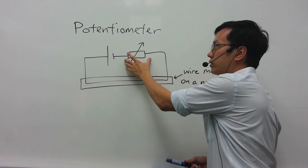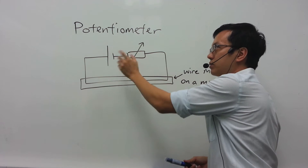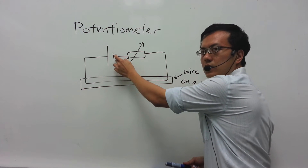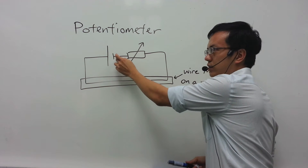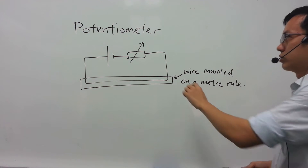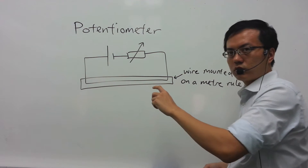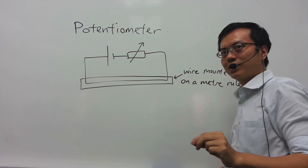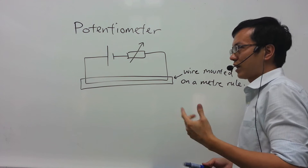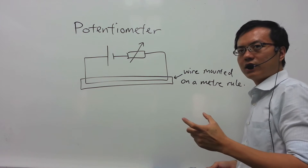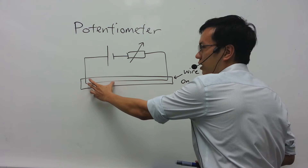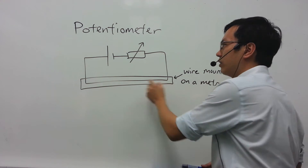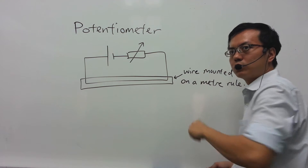Sometimes this variable resistor may not exist — instead of a variable resistor, there could just be an internal resistance of the cell. There is also usually a straight wire that is mounted on the meter ruler. The resistance of the section of wire that we will use is proportional to the length of the wire, so we are going to read off the length of the wire using the meter ruler.